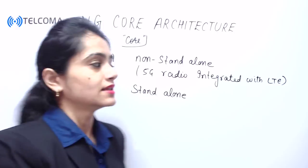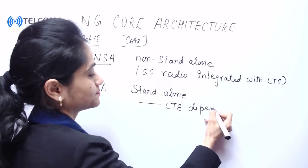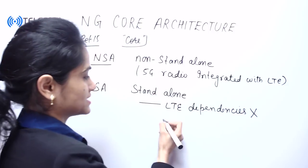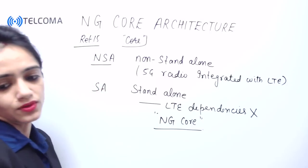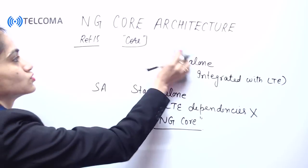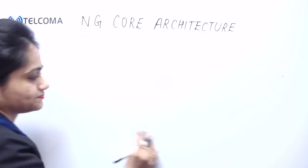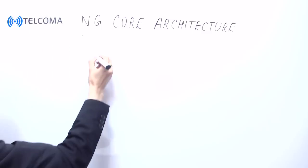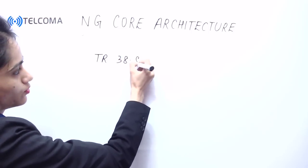That means here we don't have any LTE dependencies. We are having next generation core network as a new core network. We have various study groups that will produce TRs. TR stands for technical reports. The very first is TR 38.801.